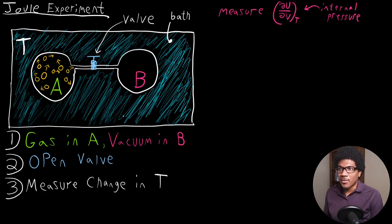So you evacuate bulb B and you have all of your gas contained in bulb A. This entire setup is set up in a water bath. So the gas is expanding in this container that's submerged in a water bath that is kept at a constant temperature. So before the expansion, thermal equilibrium is established between the bath and the system.